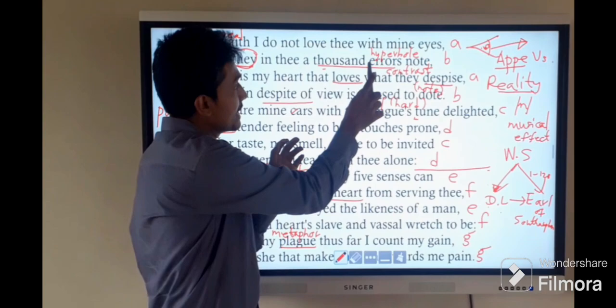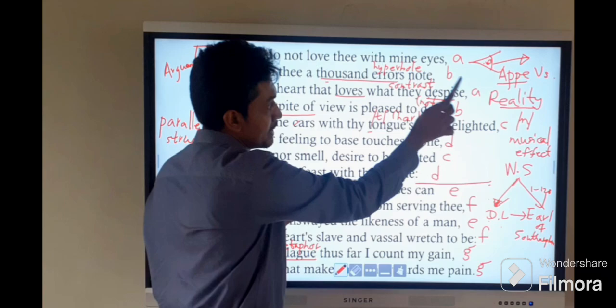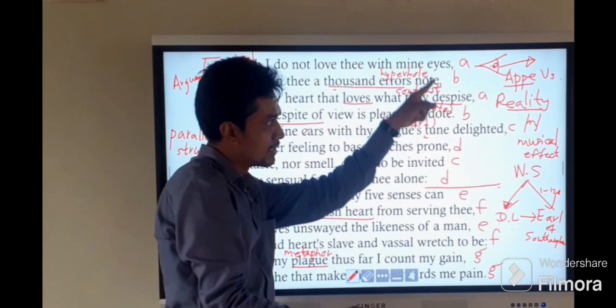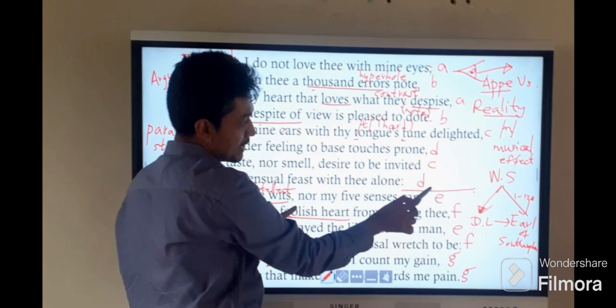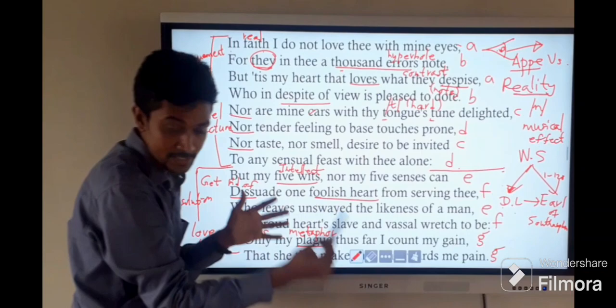You can also learn about ABAB CDCD EFEF GG writing pattern. That is the rhyme pattern in Elizabethan era. From this part to here, the eight lines we call octave. From the octave, we have an argument. And from the sestet, we have the solution or the resolution.